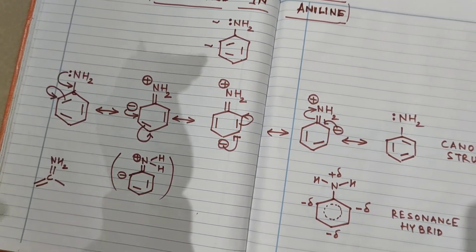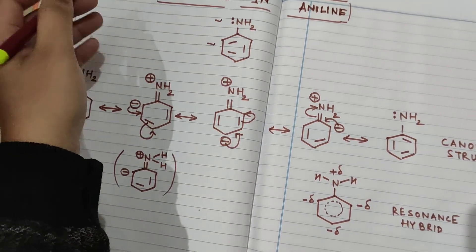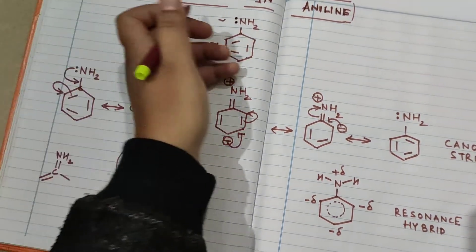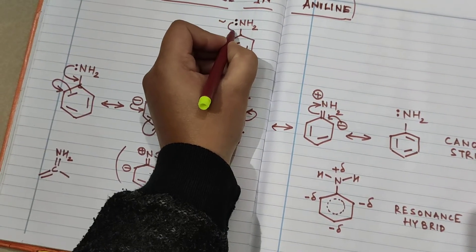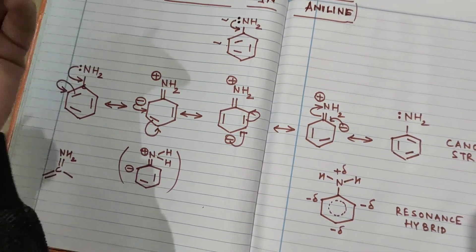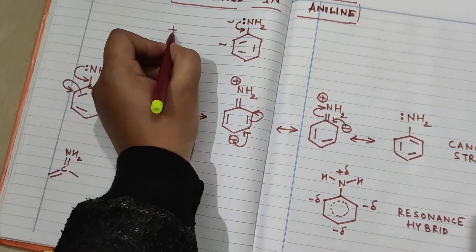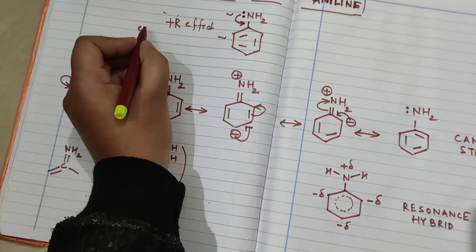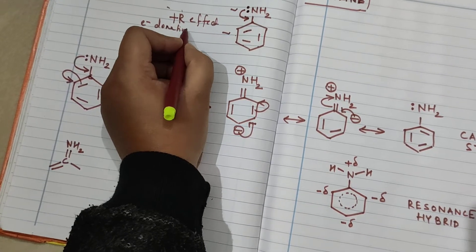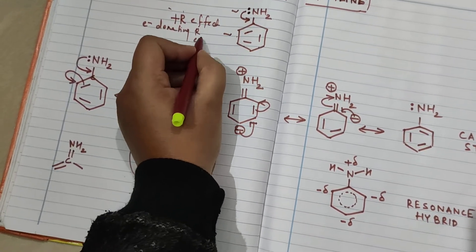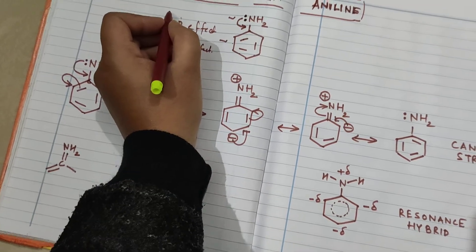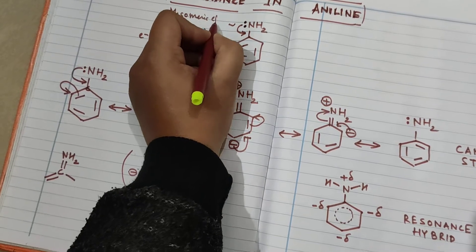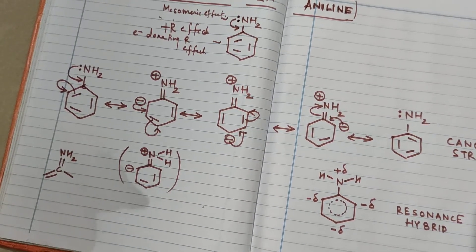Aniline has a lone pair of electrons on nitrogen, and this lone pair will be donated to the benzene ring. As aniline is donating electrons to the benzene ring, it is going to show a +R effect, which is called the electron-donating resonance effect. The resonance effect is also called the mesomeric effect.